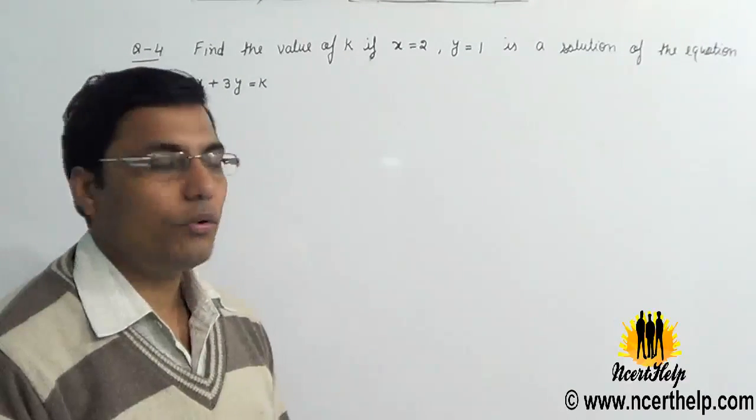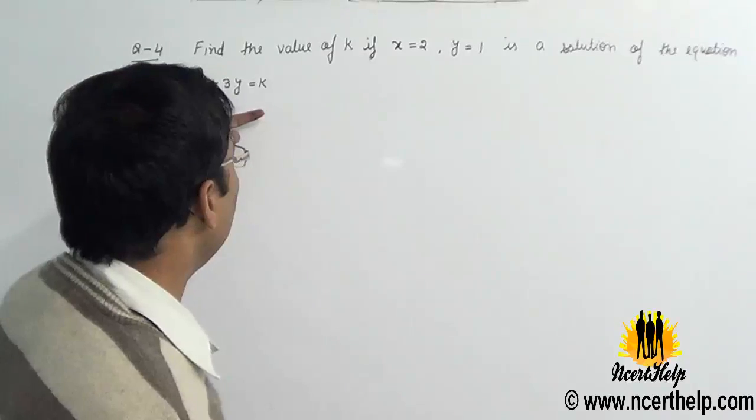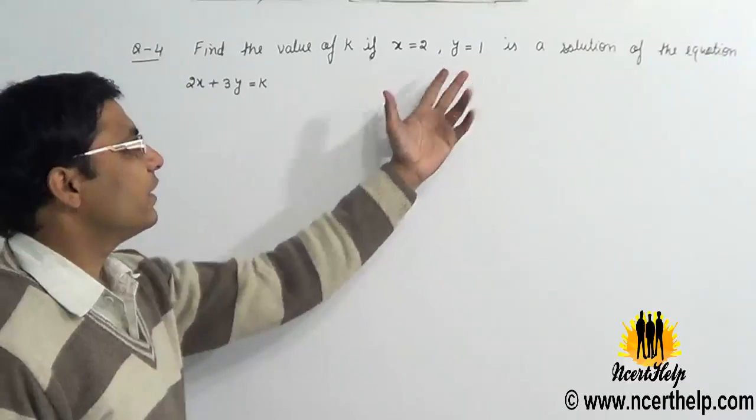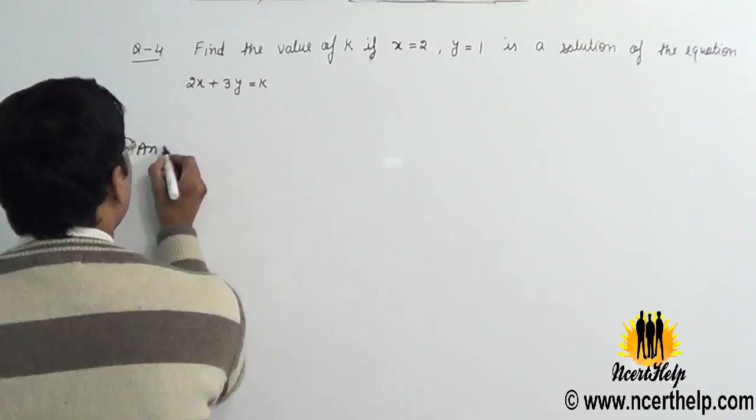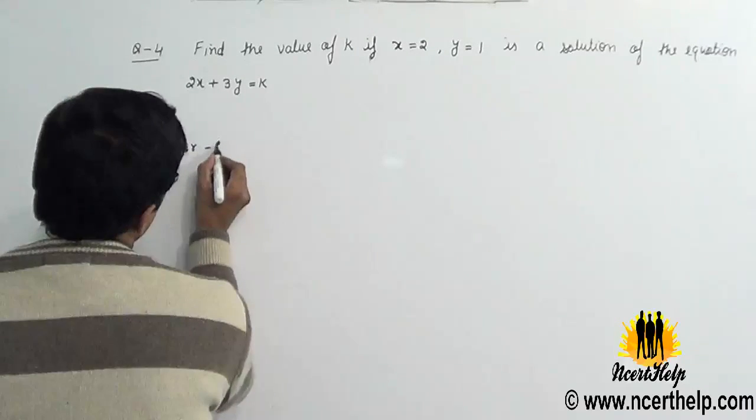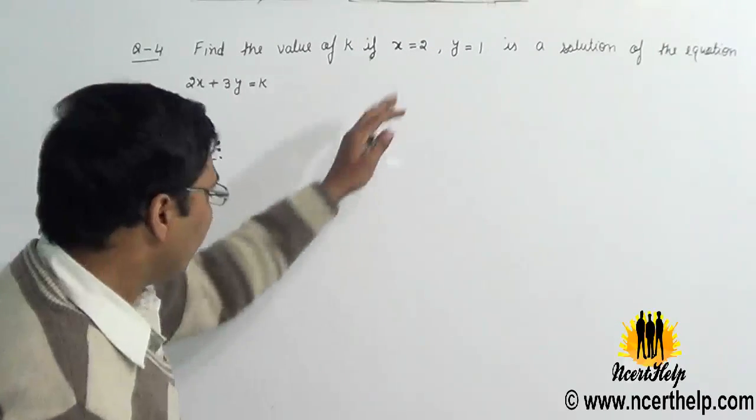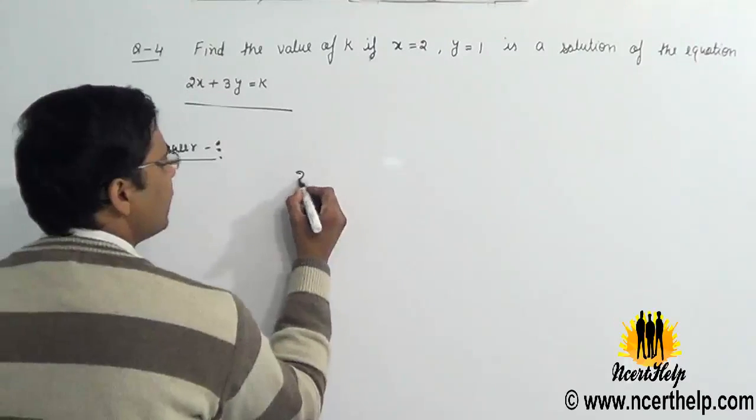In this problem we will learn how to find the value of k when the values of x and y are given. For such type of questions, first we write the equation which is 2x plus 3y equals k.